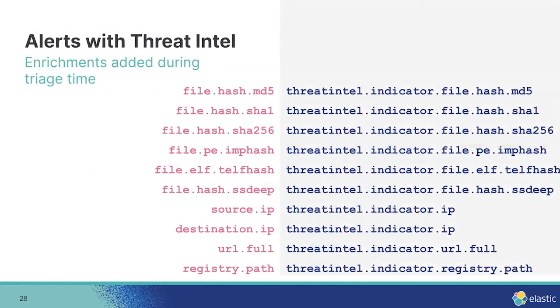A major difference between enriching events and enriching alerts is that with indicator match rules, whoever creates the rule defines the mapping — any field to any field. With alert enrichment, there is already a predefined set of fields. As shown on this slide, those include a range of file hashes, source and destination IP addresses, full URL and registry path, along with their matching indicator counterparts. As long as there's a match — say, a file hash MD5 matching an MD5 from an indicator — the threat enrichment is displayed on that alert regardless of where the alert came from.